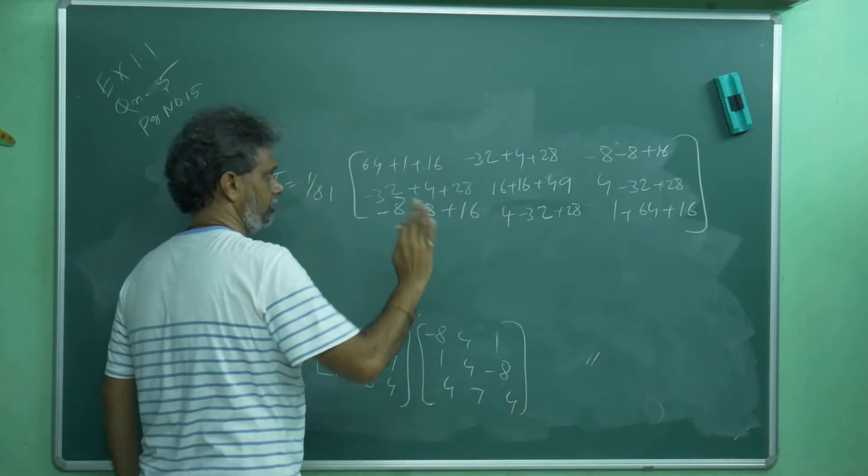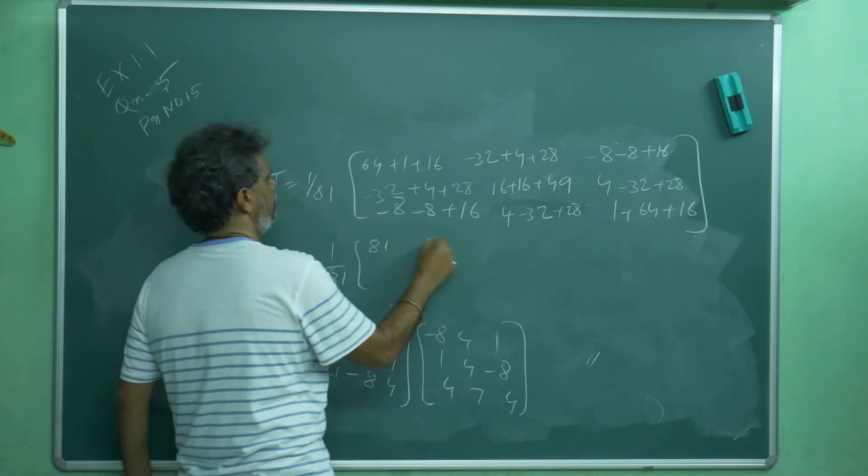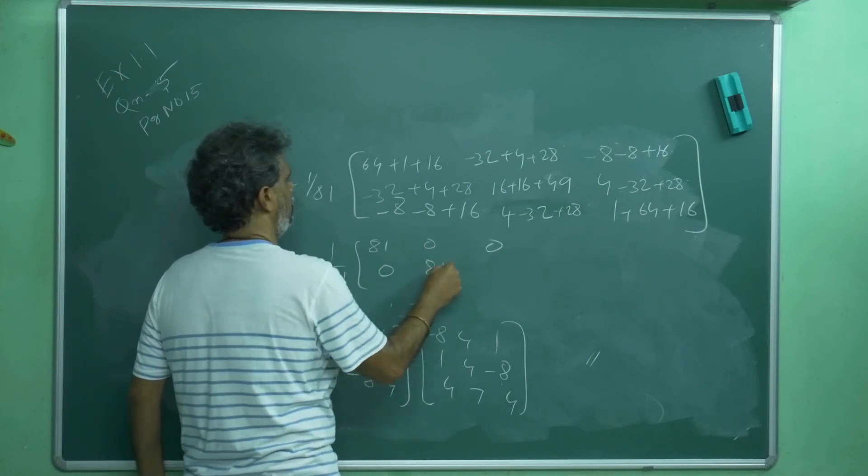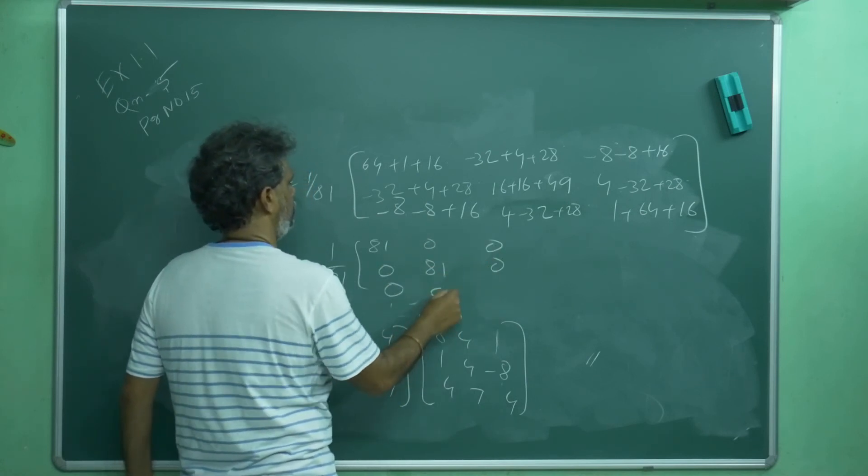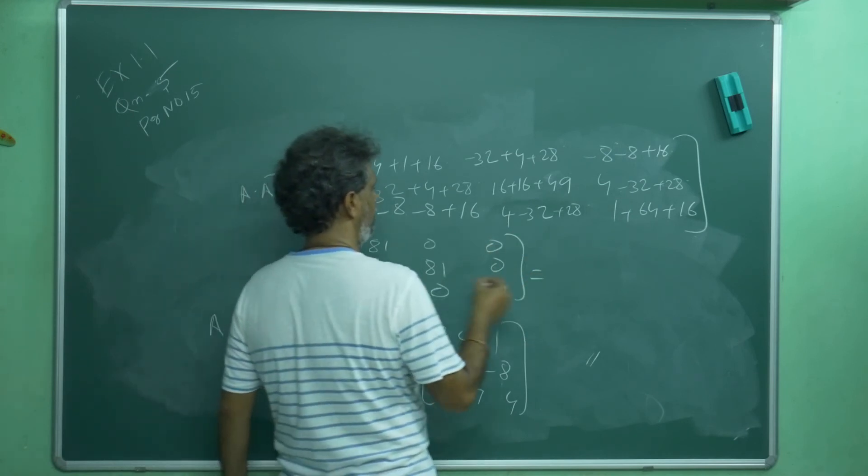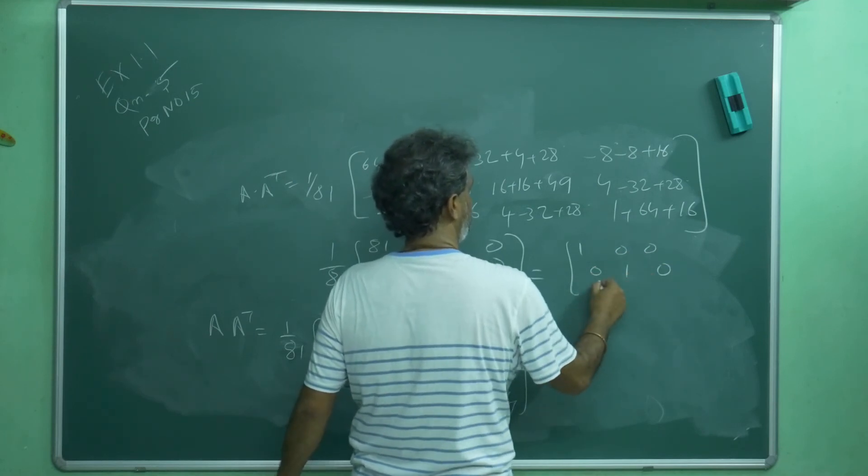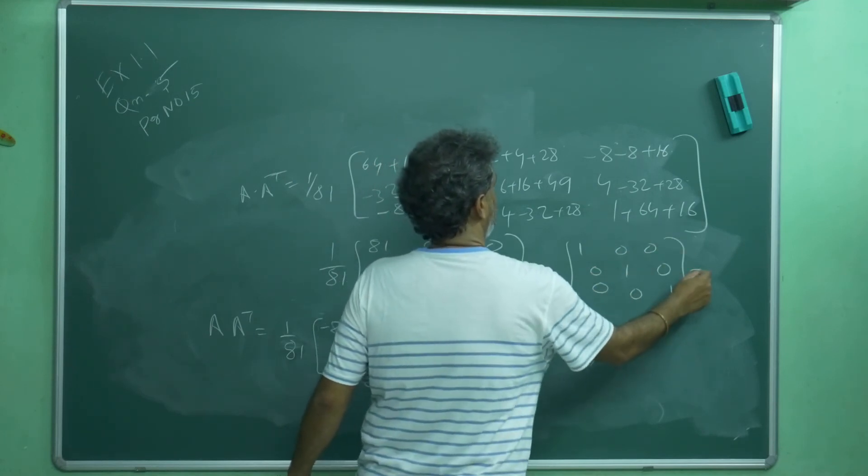Blindly you can write automatically. It will be correct. This is 81, 0, 0, 0, 81, 0, 0, 0, 81. If you take 81 from all, this is 1, 0, 0, 0, 1, 0, 0, 0, 1, which is equal to I.